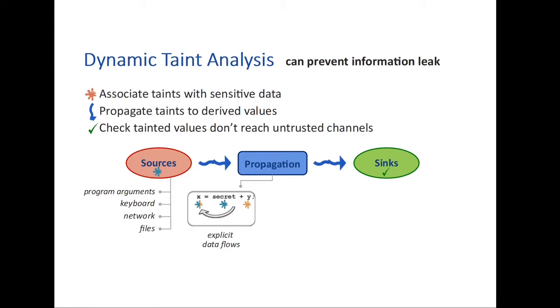The propagation rule is generally called explicit propagation. But we also have implicit propagation, for instance, by considering control flow dependence. Here you can see operations that are control dependent on the tainted secret. However, we should note that implicit propagation is rarely used in real world cases, and this is due to multiple challenges such as overtainting and huge overhead.